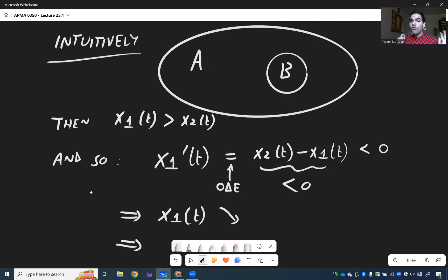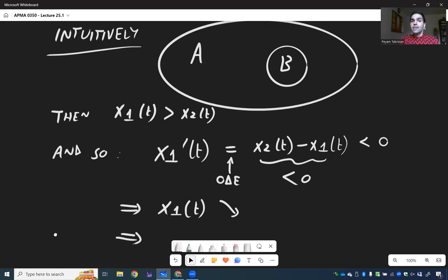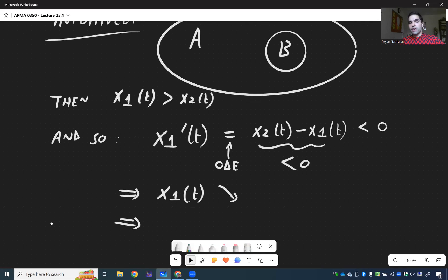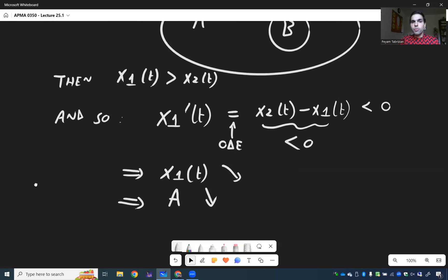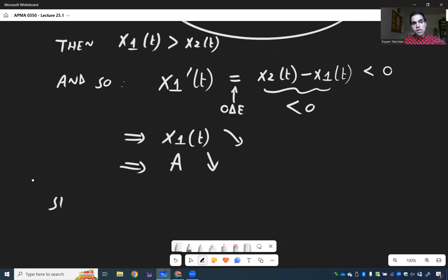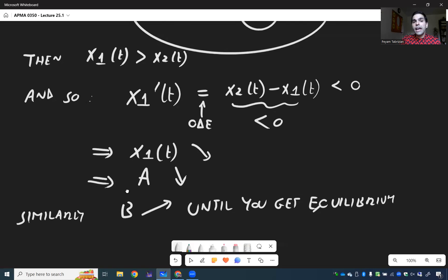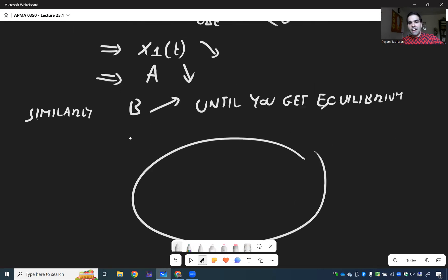or in other words if we have this compound where there's lots of A and not that much B then what happens is the concentration of A decreases and similarly X2 prime becomes positive and B increases until you get equilibrium, equilibrium meaning that in the end you should roughly get half A half B.